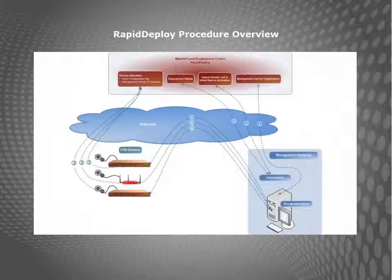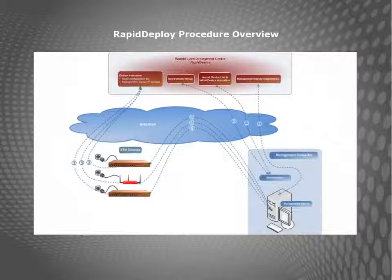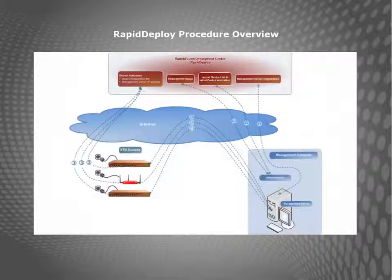As an administrator, you can go to the Deployment Center to view the deployment status of each device to determine which have successfully retrieved the basic configuration file. After the Rapid Deploy procedure is complete and your devices have contacted the management server, you can follow the usual network configuration and centralized management processes to configure network settings, change to fully managed mode, and apply a device configuration template.